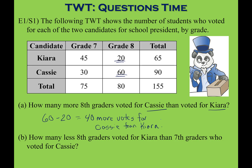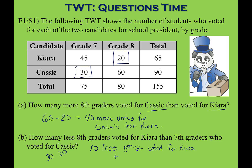How many less 8th graders voted for Kiera than 7th graders who voted for Cassie? 8th graders who voted for Kiera: that's 20. 7th graders who voted for Cassie: that's 30. What's the difference between 30 and 20? That would be 10. So 10 fewer 8th graders voted for Kiera than 7th graders voted for Cassie.